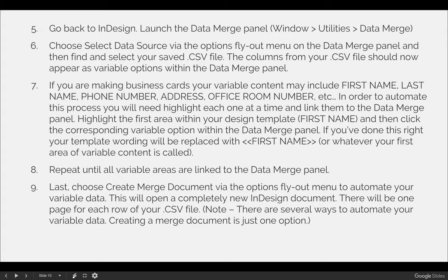Repeat this process until all variable areas are linked — highlight 'Hansen,' click 'last name' on the data merge panel, and so on. To actually automate the variable data and generate a new business card for every person on your spreadsheet, you need to create a merge document via the options menu on the data merge panel. This opens a completely new InDesign document with one new page for every record. If you have a one-page business card and 500 people on your spreadsheet, you'll get a 500-page InDesign document. A two-page front-and-back card with 500 people would produce a 1,000-page document.